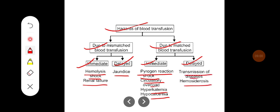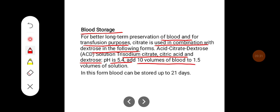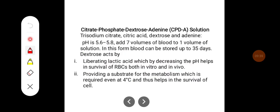For better long-term preservation of blood for transfusion purposes, citrate is used in combination with dextrose. One form is Acid Citrate Dextrose (ACD) solution, containing trisodium citrate, citric acid, and dextrose, with a pH of 5.4. You add 10 volumes of blood to 1.5 volumes of solution, and blood can be stored up to 21 days.